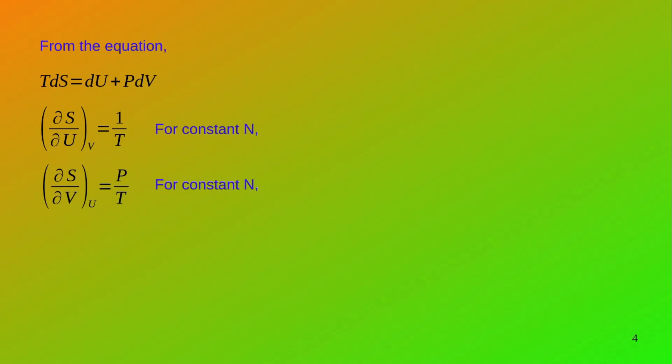The heat added reversibly can be written as T dS — that is the temperature of the system multiplied by the change in entropy of the system. Rearranging this equation, we get T dS = dU + P dV.